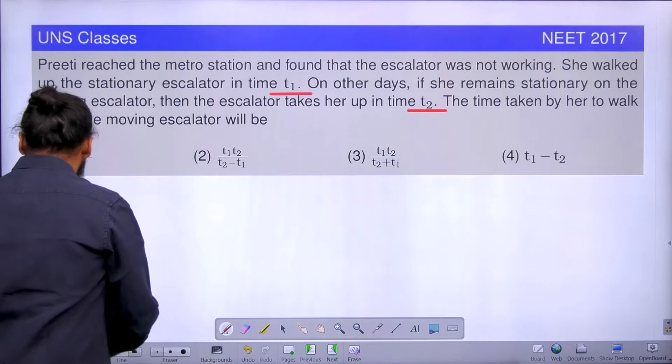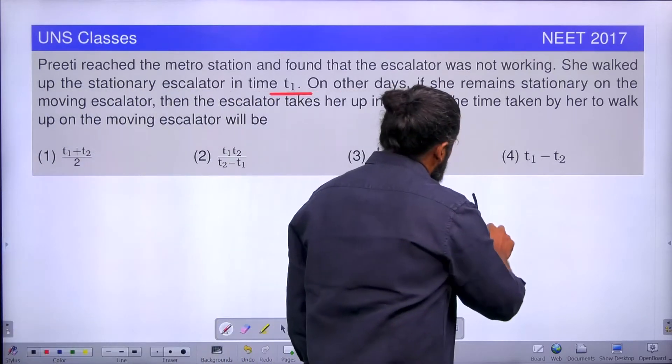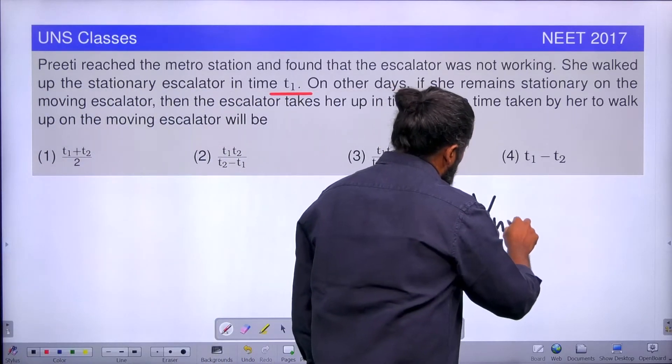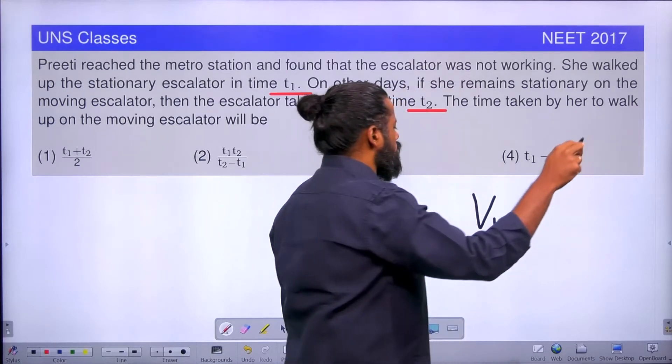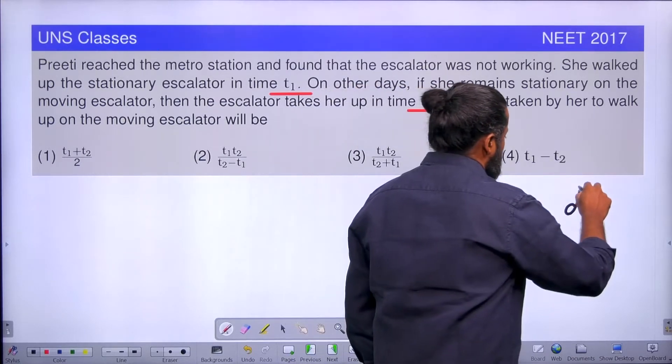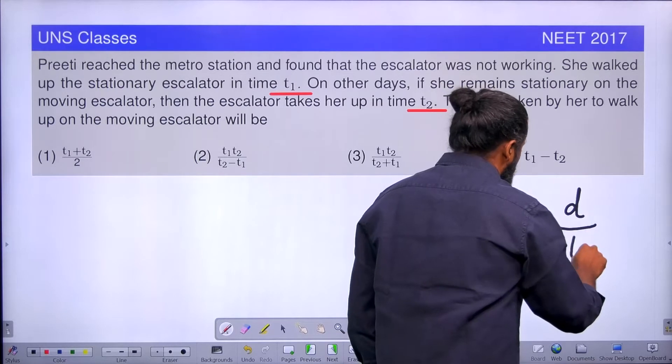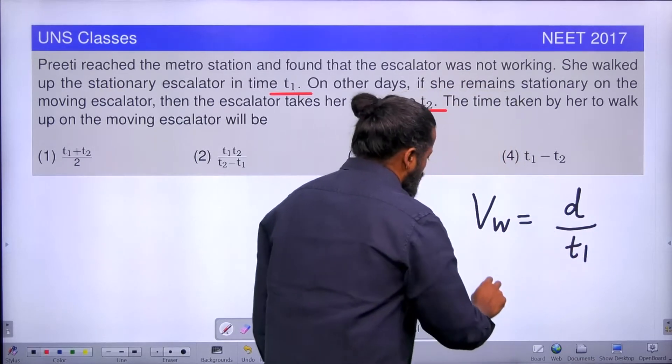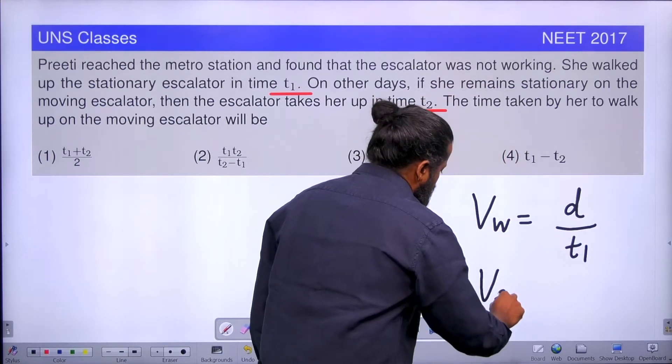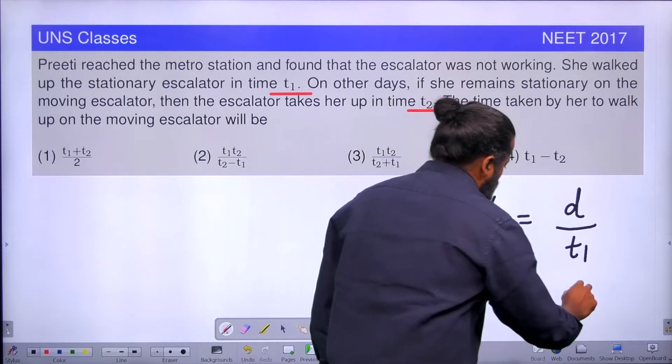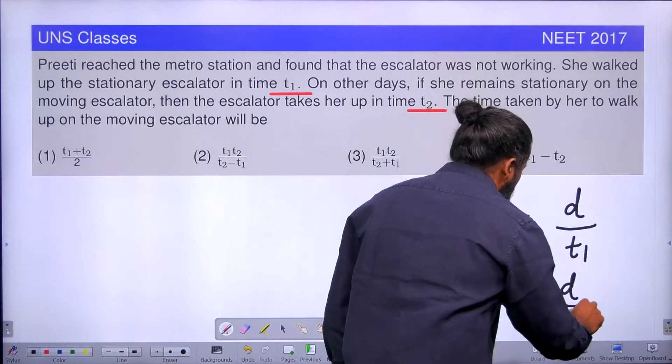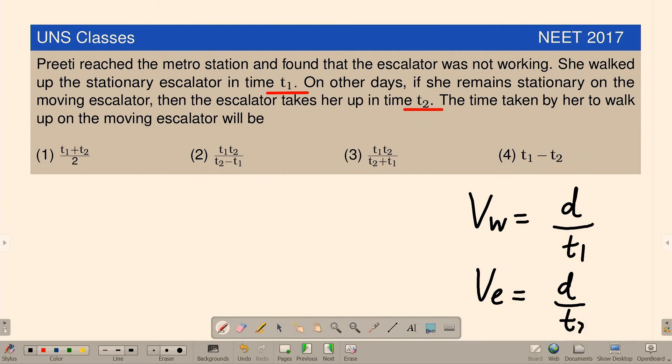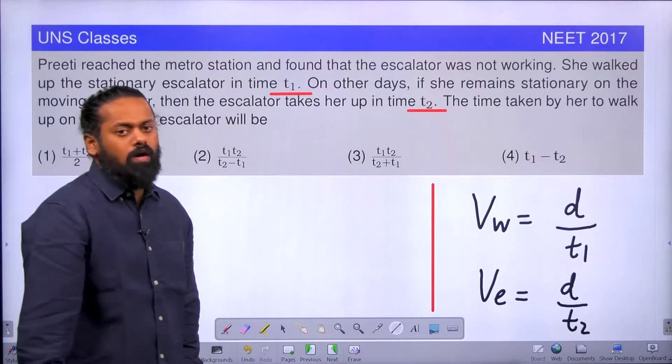We know that, assume the walking velocity is V_W. V_W is equal to the distance covered divided by time T1. Similarly, the escalator velocity, assume that is equal to D divided by T2, because all information is already given. Given that escalator is taking T2 time and while walking it is taking T1 time.